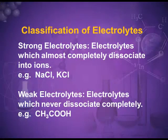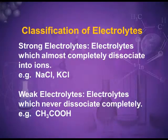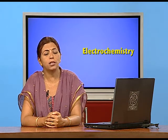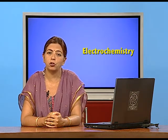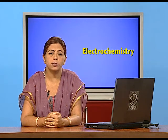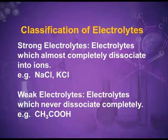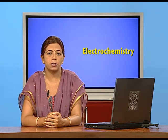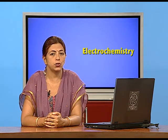These electrolytes are classified as strong and weak electrolytes. Strong electrolytes are those which almost completely dissociate into ions, for example sodium chloride and potassium chloride. Weak electrolytes never completely dissociate into ions, for example acetic acid and ammonium hydroxide.